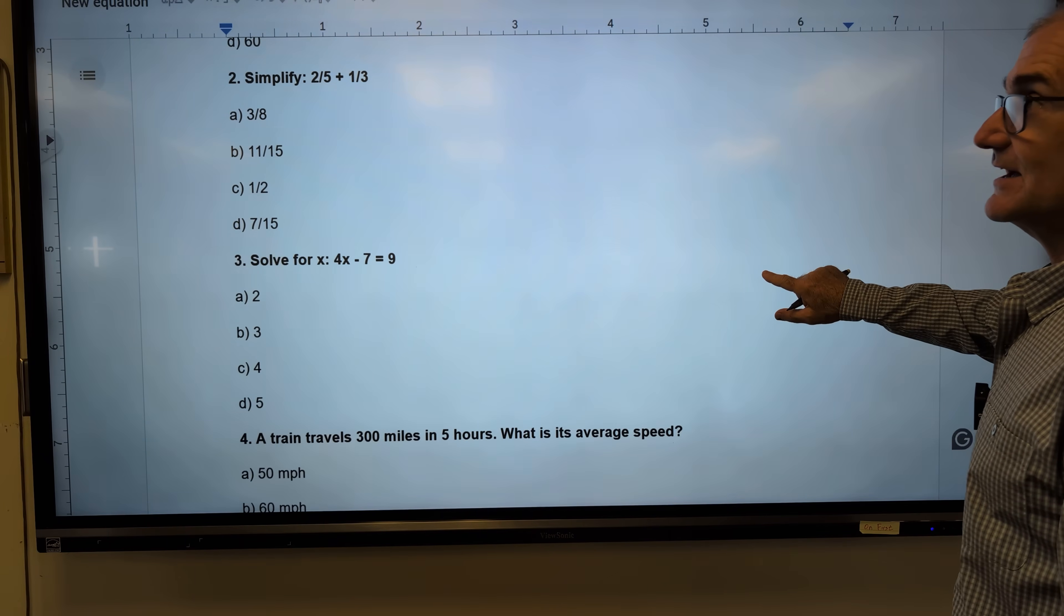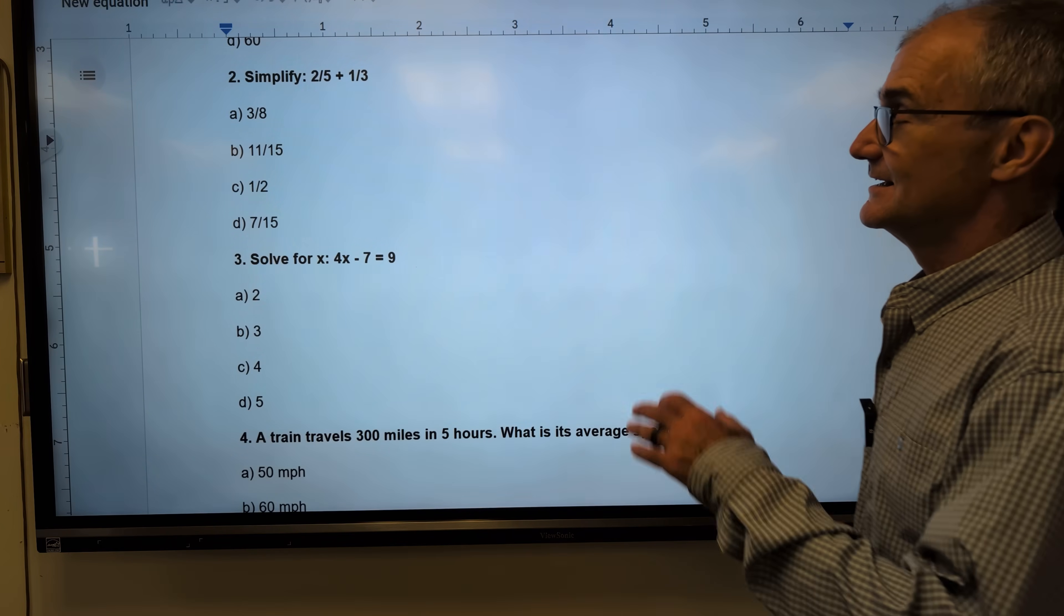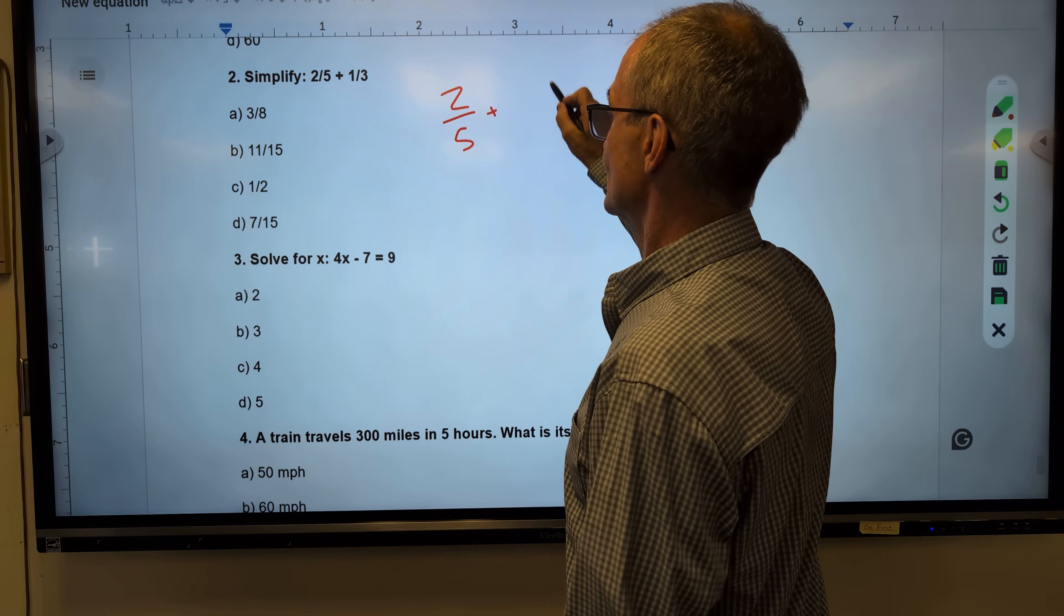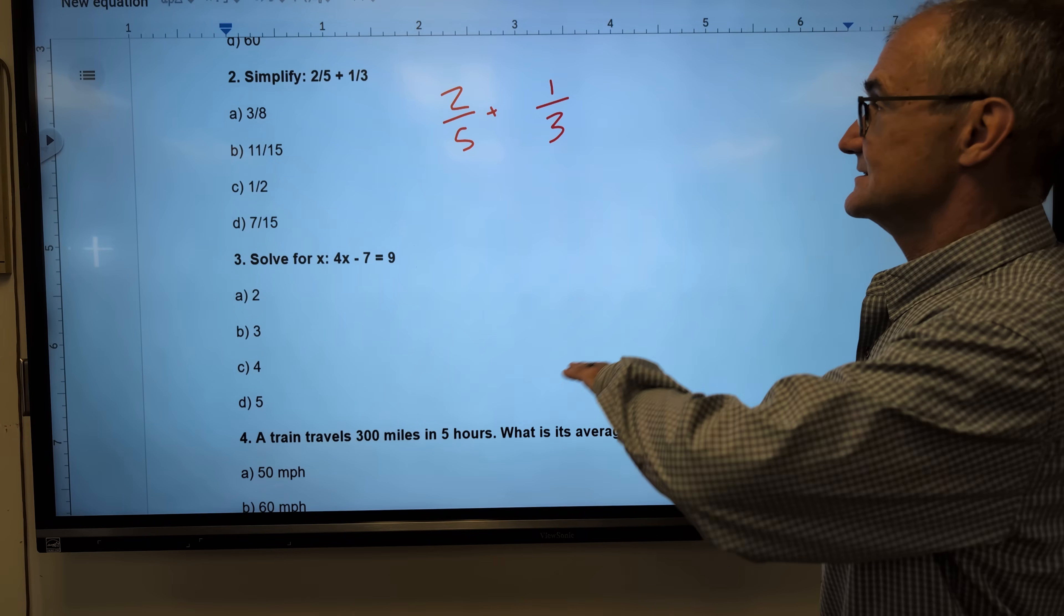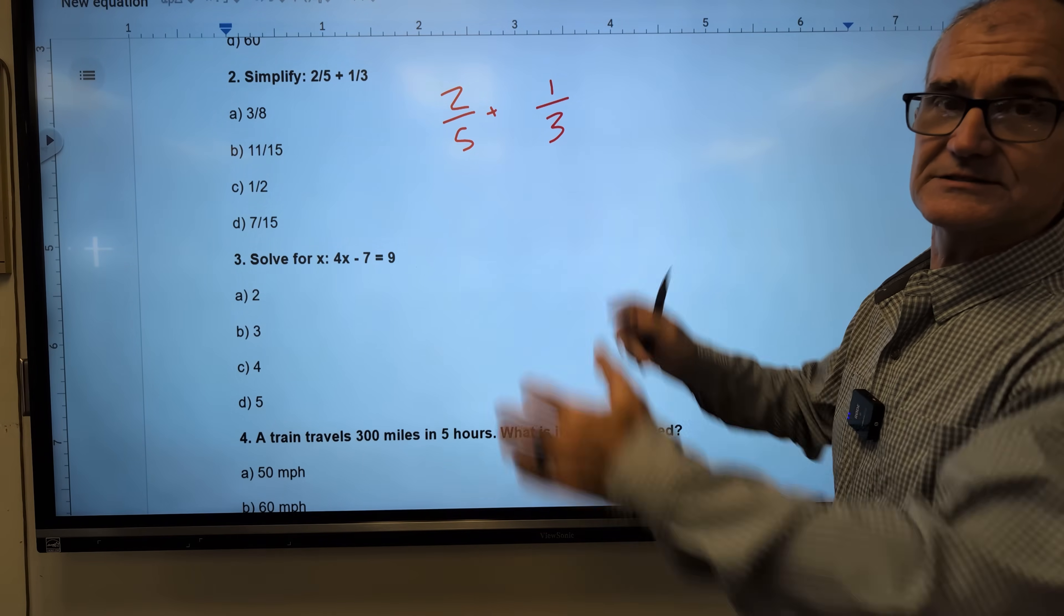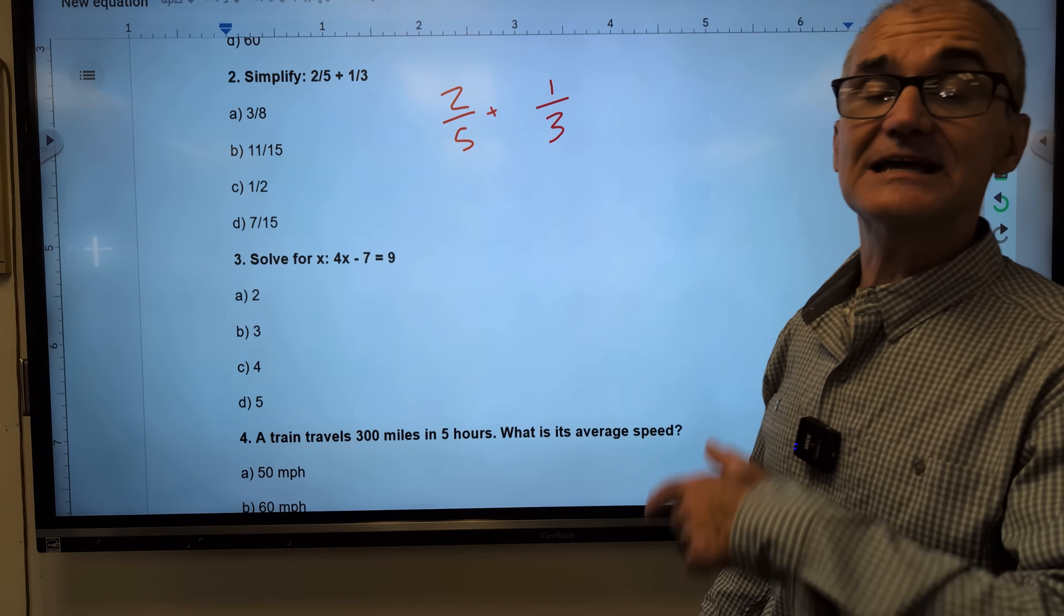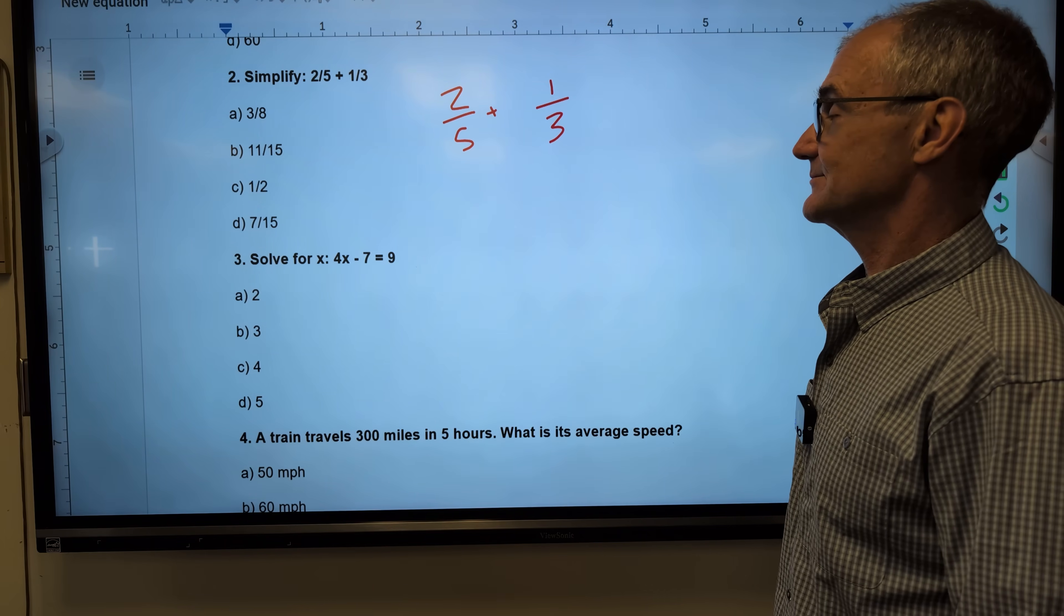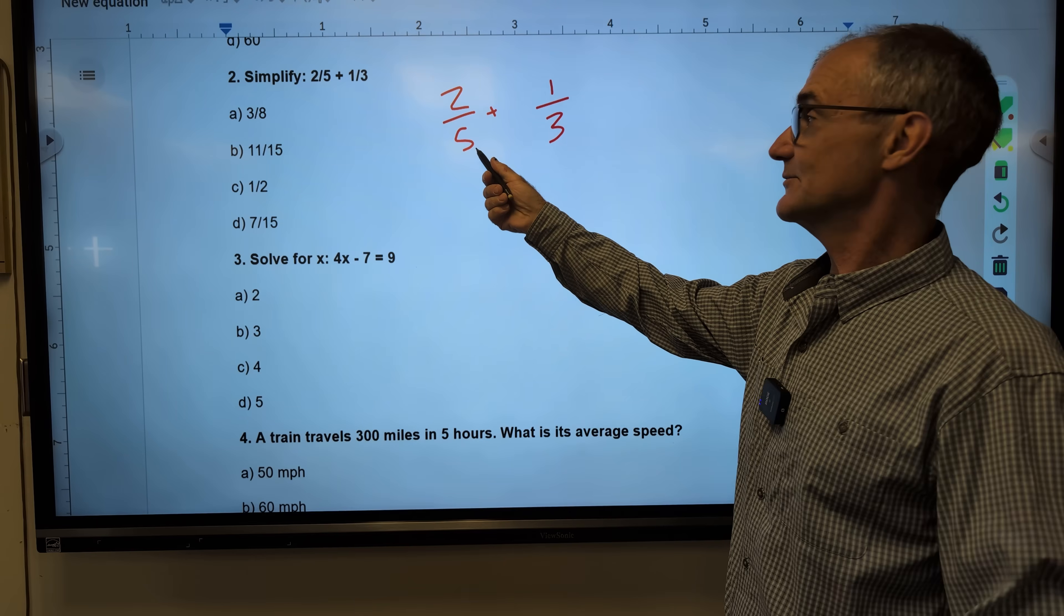Number 2, simplifying fractions. This is a tricky one. A lot of people get wrong on these standardized tests. I have 2 fifths plus 1 third. This is not an equation. It is only an expression. So I can only multiply each factor by 1 so as not to affect the value. The key to adding fractions is that they have the same denominator. The bottom number is a denominator, so they have to be the same. So the only number that these go into, or the smallest number they go into, is 15.